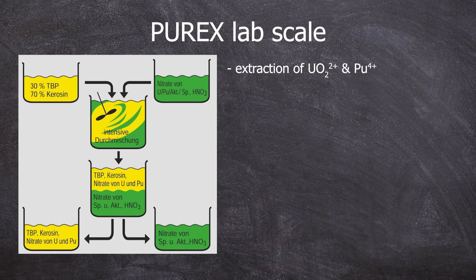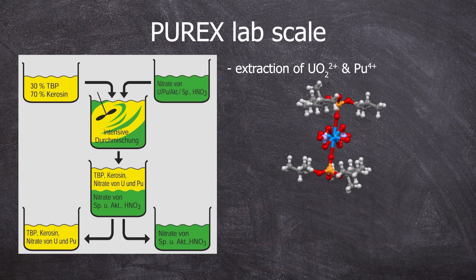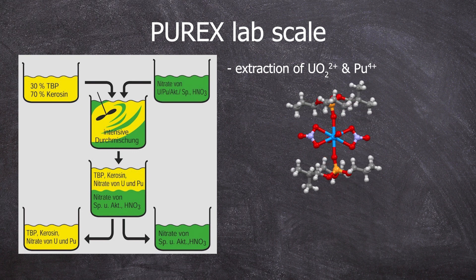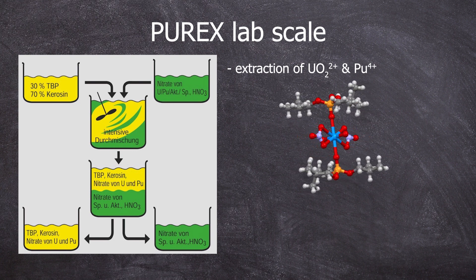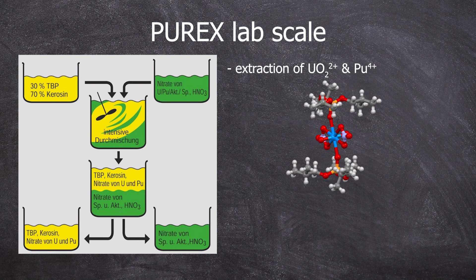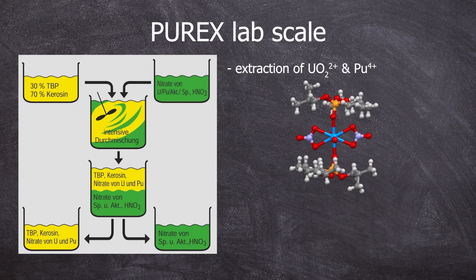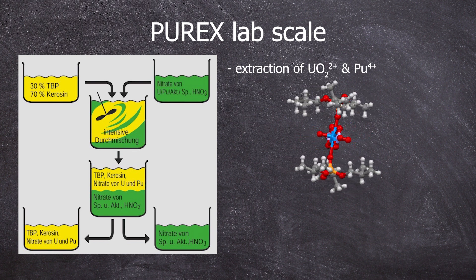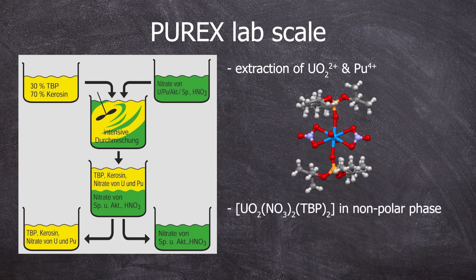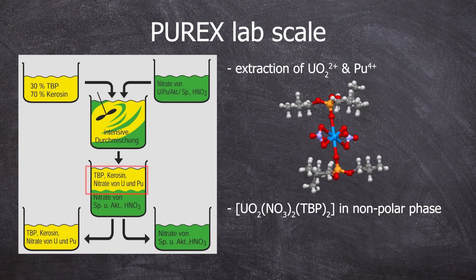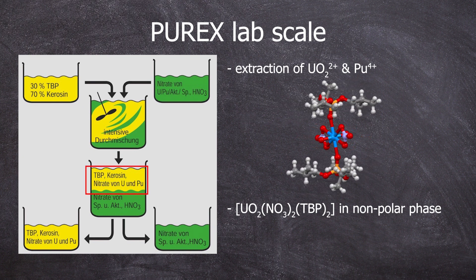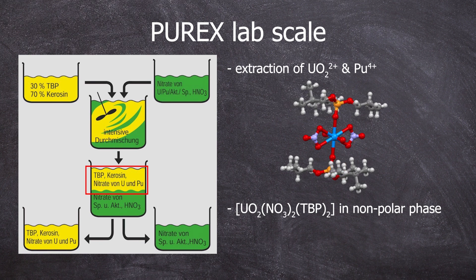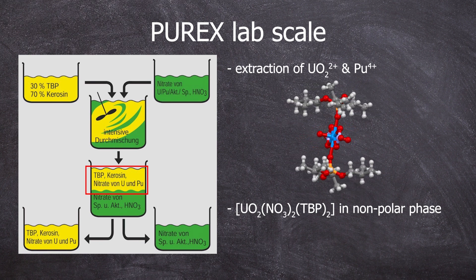With the uranyl ion and the Plutonium-4-plus ion, TBP forms a complex — in this case it's the uranyl ion. This way, uranium and plutonium, and minimal amounts of neptunium and technetium, can be extracted from the aqueous phase — yes, concentrated nitric acid is considered an aqueous phase — into the non-polar kerosene phase. Everything else, fission products and actinides, remains in the aqueous phase and can then be drained off.